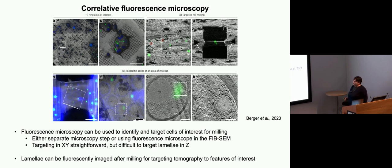At the moment, targeting in X and Y is fairly trivial. It's still not straightforward to try to get the lamella at the right height in Z through the cells. There are approaches, but they work to some degree using things like cryo-confocal data, but it's still, I think, needs a bit of improvement to be universally useful.